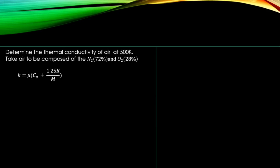For polyatomic gases there is a separate formula to find thermal conductivity. Nitrogen and oxygen are both polyatomic gases. Air is composed of nitrogen (72%) and oxygen (28%), making it a polyatomic gas mixture. We want to determine the thermal conductivity of air at 500 Kelvin.